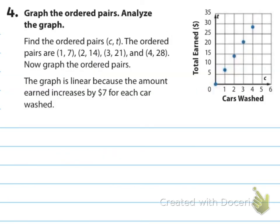Number four says graph the ordered pairs and analyze the graph. The ordered pairs (C, T) are (1,7), (2,14), (3,21), and (4,28). The graph is linear because the amount earned increases by $7 for each car washed — we have a straight line because every time we move one to the right we go up 7.